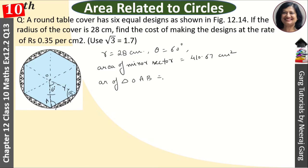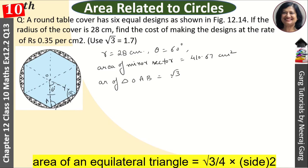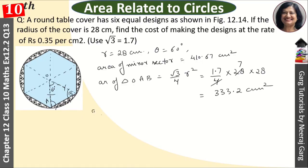So the area of triangle formula will be root 3 upon 4, side square, side R. So root 3 upon 4, r square. Root 3 given as 1.7 into 4 into 28 into 28. This will cancel 7 and multiply, that equals 333.2 centimeter square.